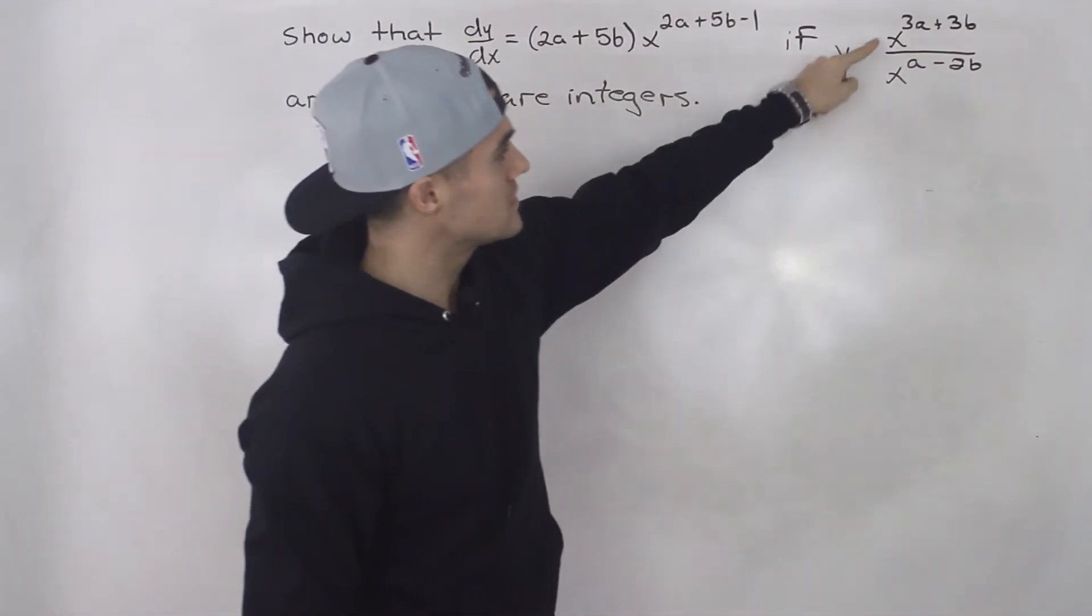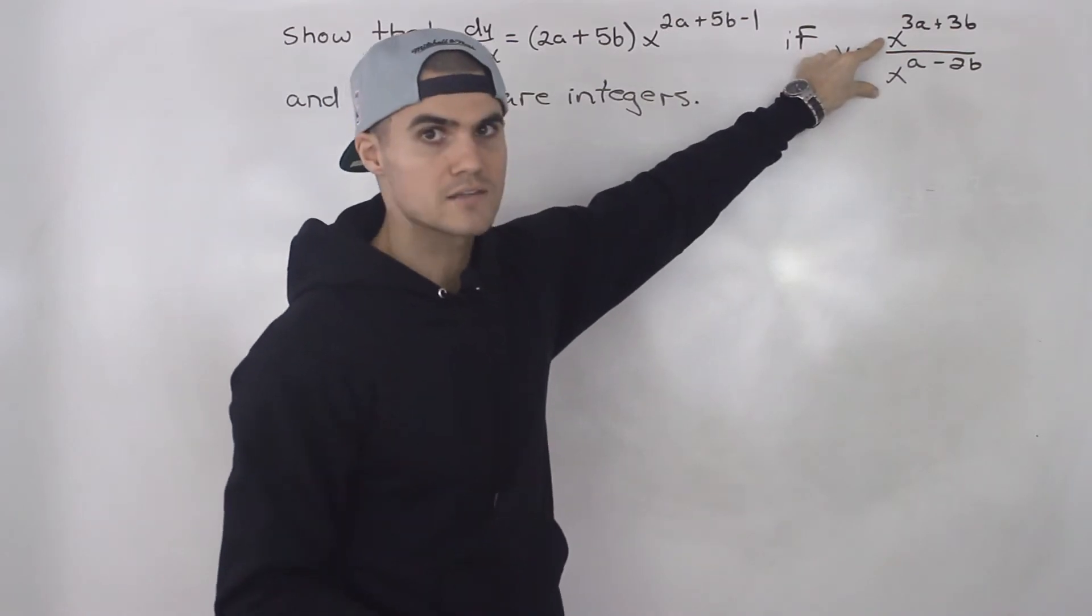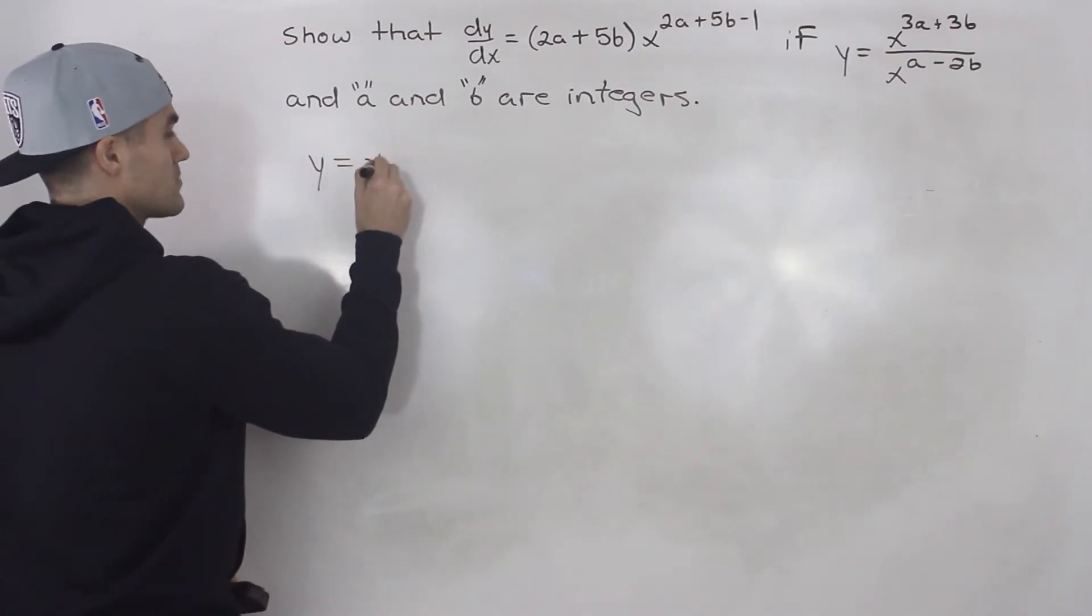An easier way to do this is to notice that these two functions on top of each other have the same base x, so you can first simplify those exponents.